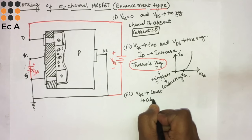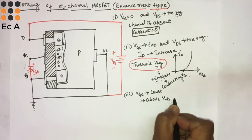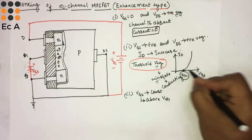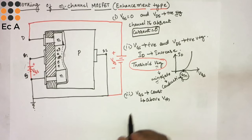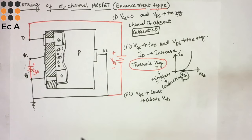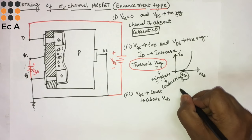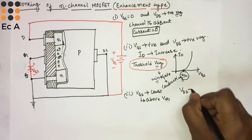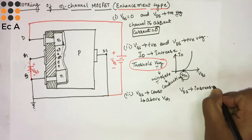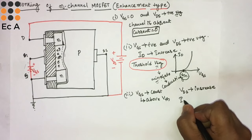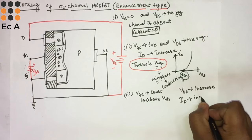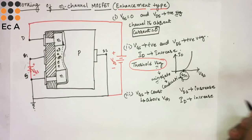Now, VGS is made constant and kept above the threshold voltage VTH so that the MOSFET is conducting. As we keep on increasing VDS, the drain current will also increase.